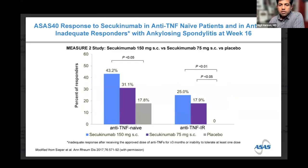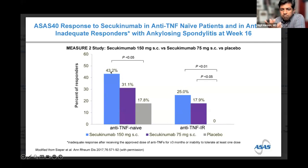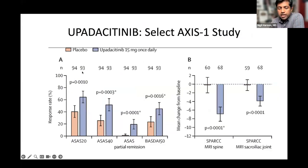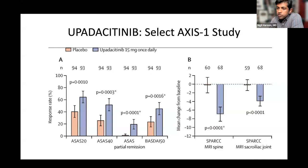For the IL-17 inhibitor secukinumab, a similar ~40–45% ASAS-40 response is seen by week 16, with lower response in patients who have already failed a TNF inhibitor. For the JAK inhibitor upadacitinib, again a similar ~40% response. So across TNF inhibitors, IL-17 inhibitors, and JAK inhibitors, we see roughly 45–50% chance of a 40% improvement within three to six months of therapy.